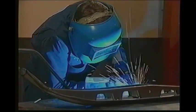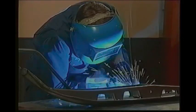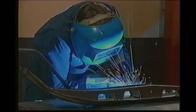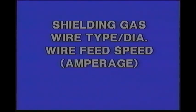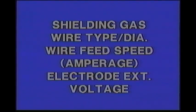Gas metal arc welding is often referred to as MIG welding, which stands for metal inert gas. The main variables that affect the type of metal transfer include shielding gas, wire type and diameter, wire feed speed, electrode extension, and voltage. We'll discuss these variables as they apply to the various metal transfers.